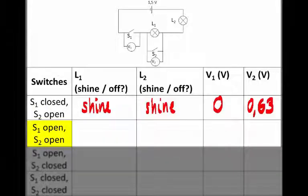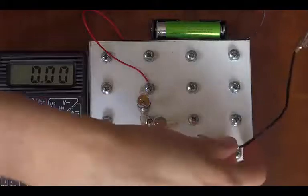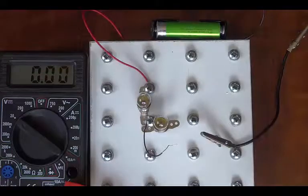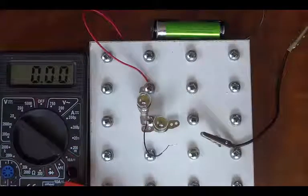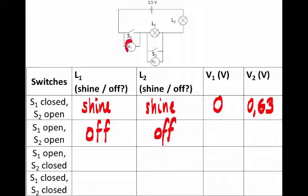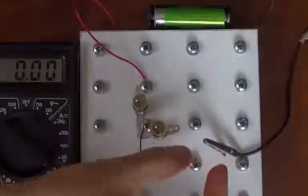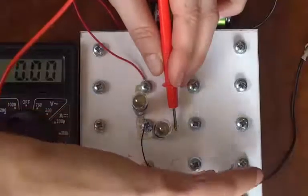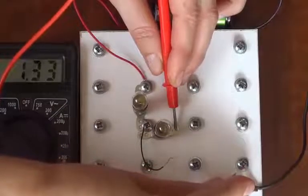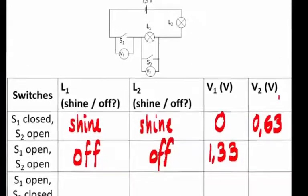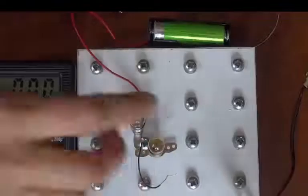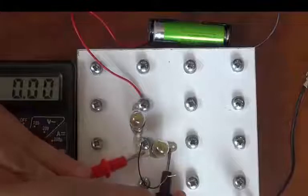Next setup: we need switch 1 open. So that's the crocodile clip, we open it up. And switch 2 must also be open. We can see that the bulbs do not shine. It's a broken circuit, so that's not surprising. They're both off. Now we need V1, which is across the open switch, so it must be across this gap. So one probe we touch here and the other one there. What do we get? 1.33 volts. Now we want to measure V2, which is the voltage across switch 2, which is open. It's also the voltage across L1, bulb 1. Unsurprisingly, we find 0 volt.